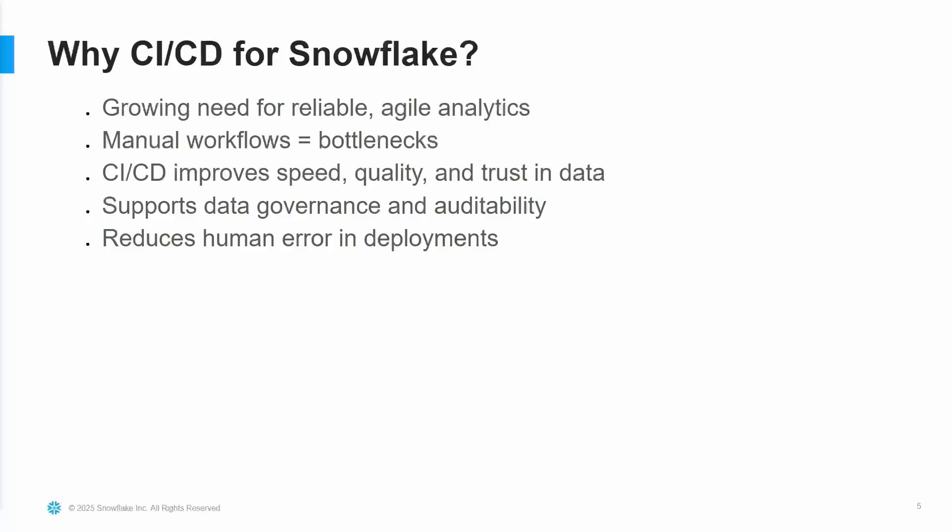Especially with the DBT part, the data lineage comes into play. Think about how many times, when new people join your team, you share a document with them but you always have some code where the document is not updated. There could be some minor backlog. How can we fix all those things? If you have DBT in your infrastructure, how can we fix that stuff within the CI/CD pipeline? Those things I'm going to cover.